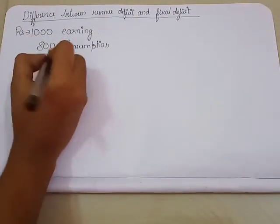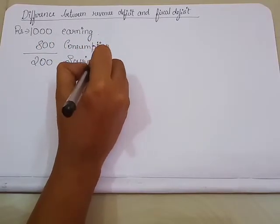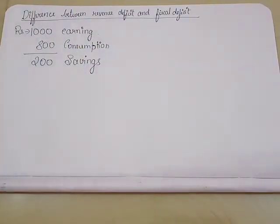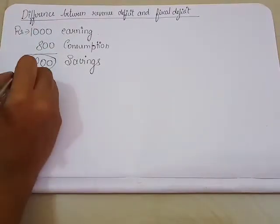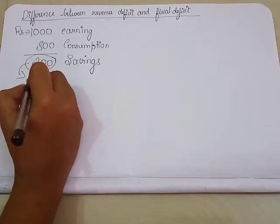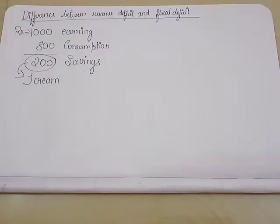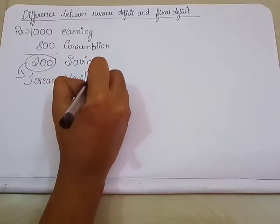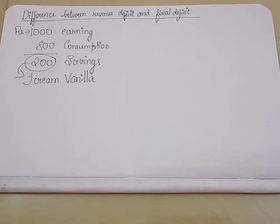So 800 rupees are gone in consumption expenditure. So I have to save 200 rupees. I have to save 200 rupees — clear? So with these 200 rupees I want to buy one ice cream — a family pack. Let us assume I want to have a vanilla ice cream, that big box of vanilla ice cream. I have to get it with this 200 rupees. This is my plan.